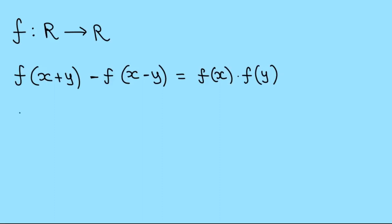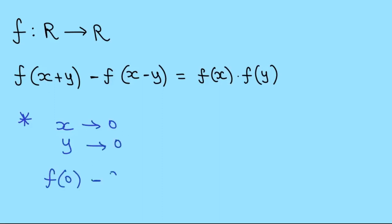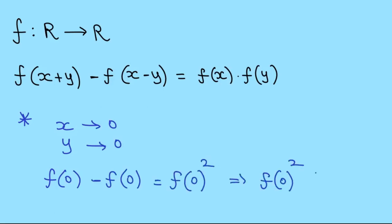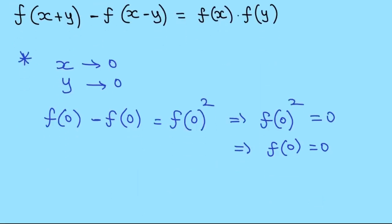Let us begin by making some observations. The first observation: let x=0 and y=0. The original equation becomes f(0) - f(0) = f(0)·f(0) = f(0)². This gives f(0)² = 0, therefore f(0) = 0. This is the first observation.